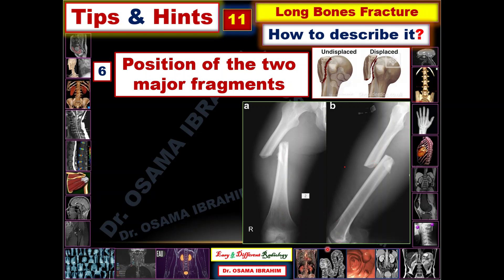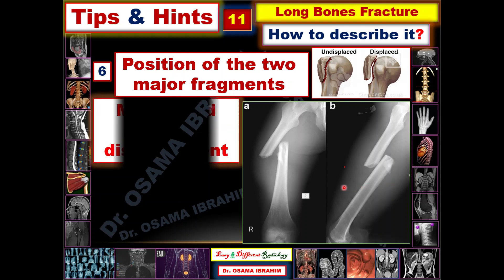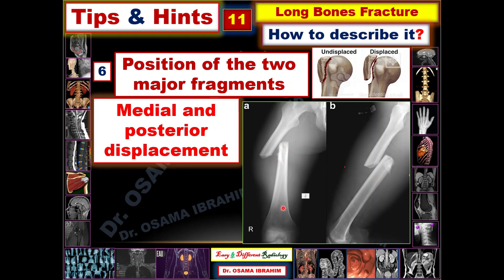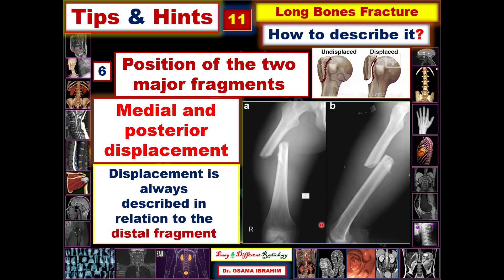Looking at the lateral view — this is the patella, so this is the anterior aspect and this is the posterior aspect — the distal segment is displaced posteriorly. To describe the position of the two major fragments here: this is a displaced fracture, with medial and posterior displacement of the distal part of the fractured femur. Displacement always describes the relationship to the distal fragment, so you always look at the distal fragment and note its displacement medially or laterally on the AP view, and anteriorly or posteriorly on the lateral view.